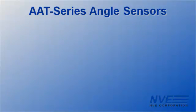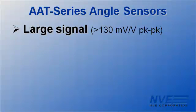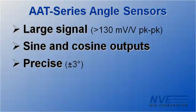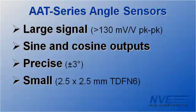So to sum up, we've demonstrated that AAT sensors are ideal for closed loop control. These sensors have large output signals, sine and cosine outputs provide quadrature, they're precise, and they come in an ultra-miniature package.